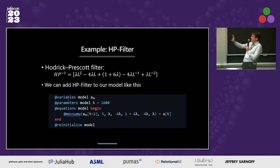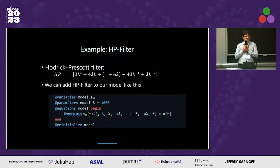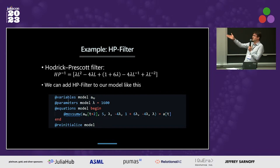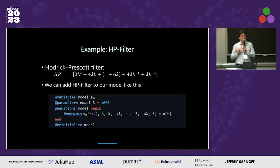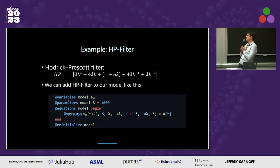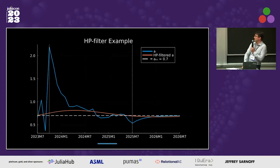Here's an interesting example: how we can add the Hodrick-Prescott filter to our simple model. This is a popular filter among economists, and we can literally directly implement the definition of the filter by using this moving weighted sum — we spell out the coefficients, and the solver inverts this operator and applies the HP filter to A. Very intuitive and straightforward for economists to implement. Here is an example of a simulation with it.